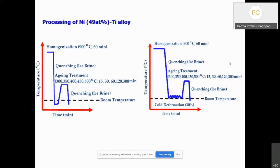In one of the schedules, we quenched the homogeneous sample in ice brine and further subjected it to aging treatment. We had 25 combinations of temperature and time for conducting the aging treatment. In the other schedule, after quenching, the alloy is subjected to 30% cold deformation, which is followed by aging.